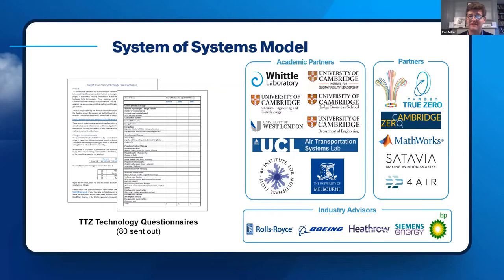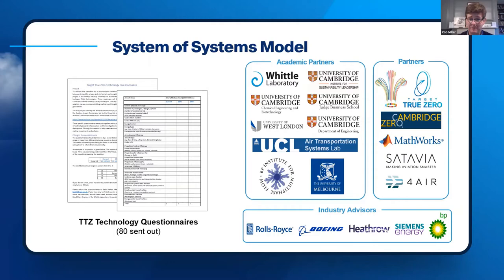We have deep technical expertise from academic partners including departments across the university — the Cambridge Institute for Sustainability Leadership, chemical engineering, transport modeling from UCL — and modeling support from companies such as MathWorks. Industrial advisors have given us complete open access to their deep technologists. For instance, over the summer we worked with a team at Boeing to ensure our aircraft design models were realistic.